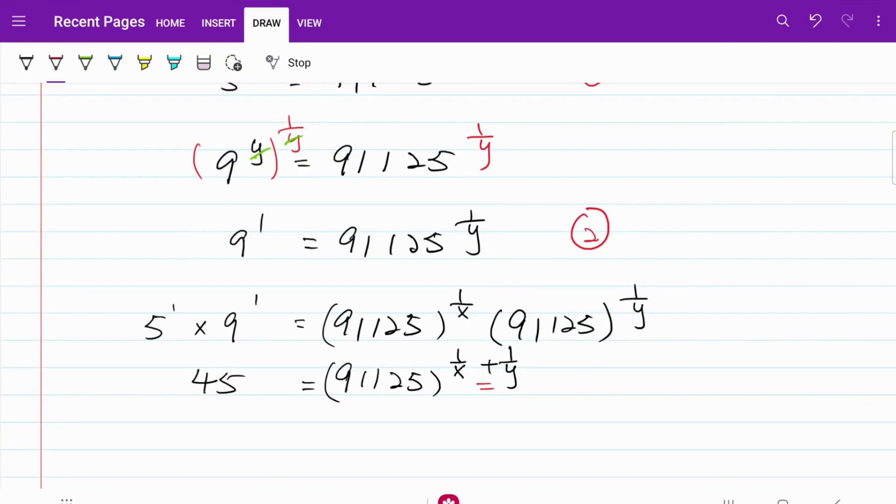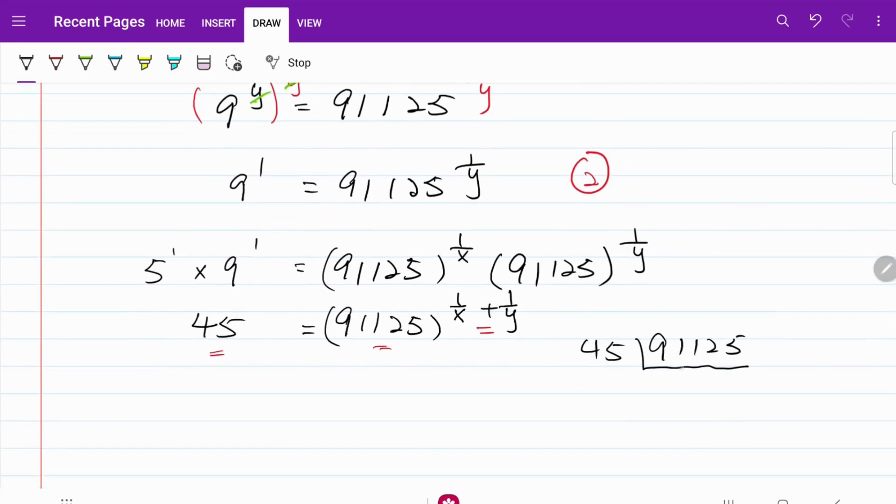For the next step, let's try to figure the relationship between 91,125 and 45. And at this stage, I'm just going to cheat a little bit and use a calculator. If I have 91,125 divided by 45, that's equivalent to 2,025. If I divide this further by 45, I would actually have another 45.